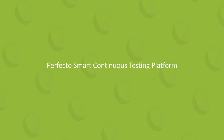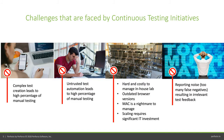Let's talk about the Perfecto Smart Continuous Testing Platform. These are the main pillars of challenges faced by continuous testing initiatives: test creation, execution, the lab, and analytics. Complex test creation leads to a high percentage of manual testing — the question being whether we trust automation to take over and help us test at scale, or revert to manual testing because we understand the workflow and can trust the tests.